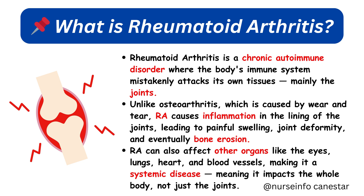RA can also affect other organs like the eyes, lungs, heart, and blood vessels, making it a systemic disease — meaning it impacts the whole body, not just the joints.